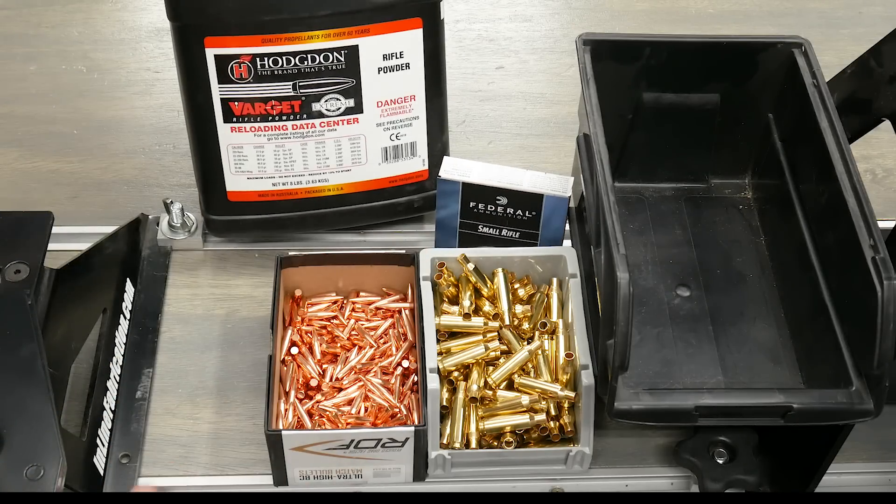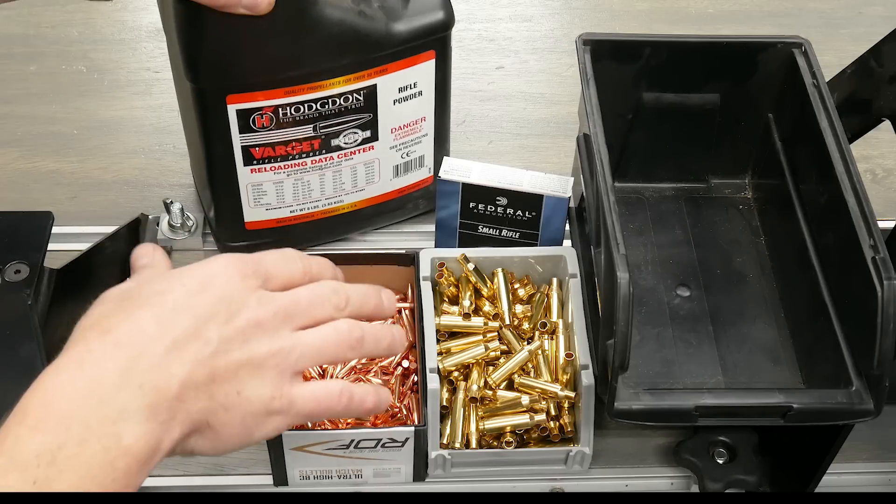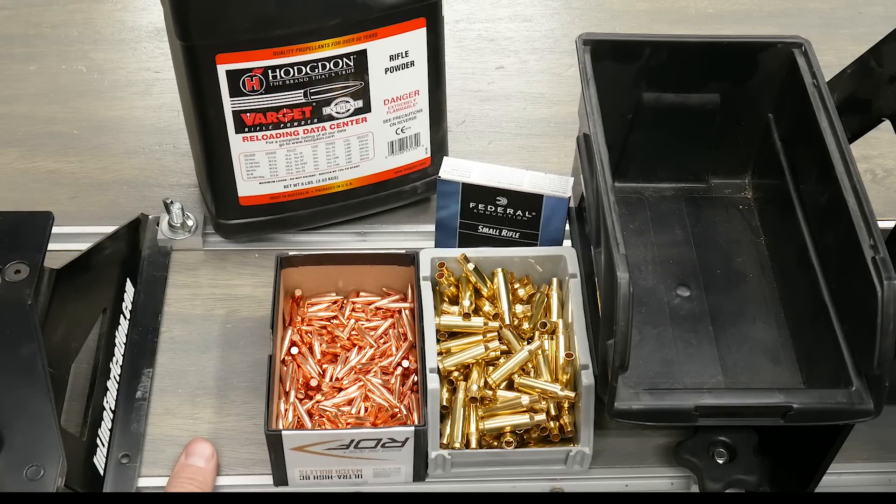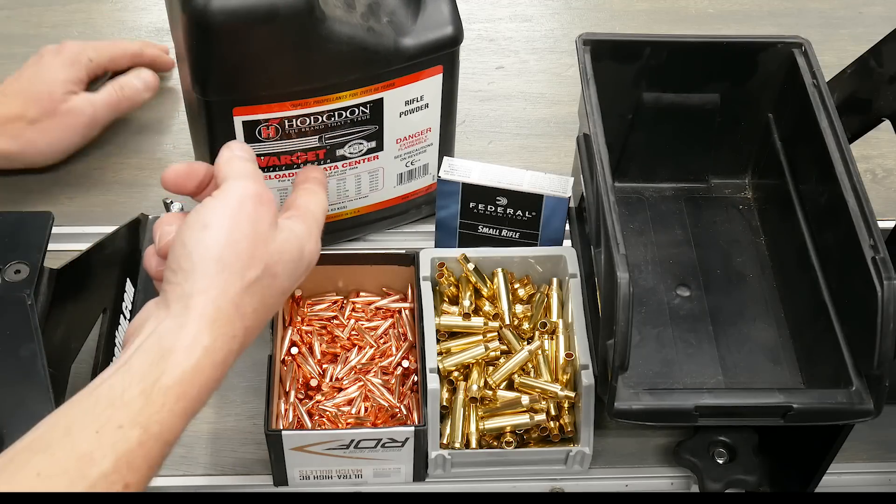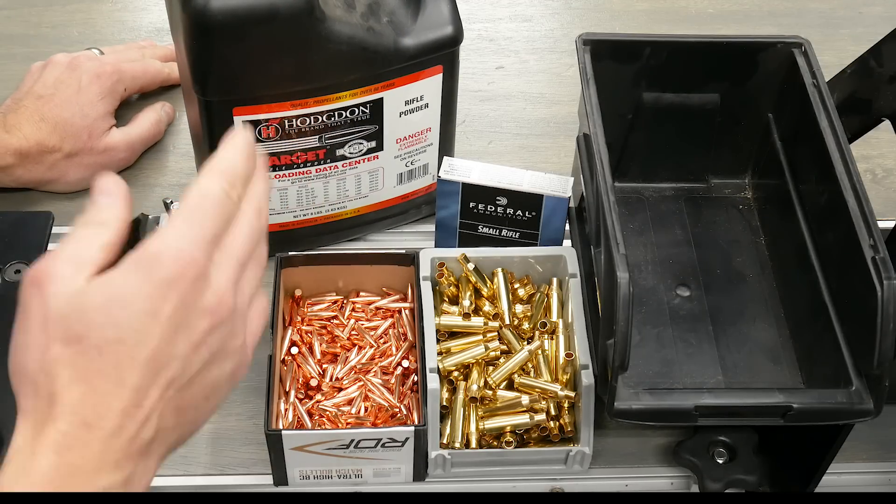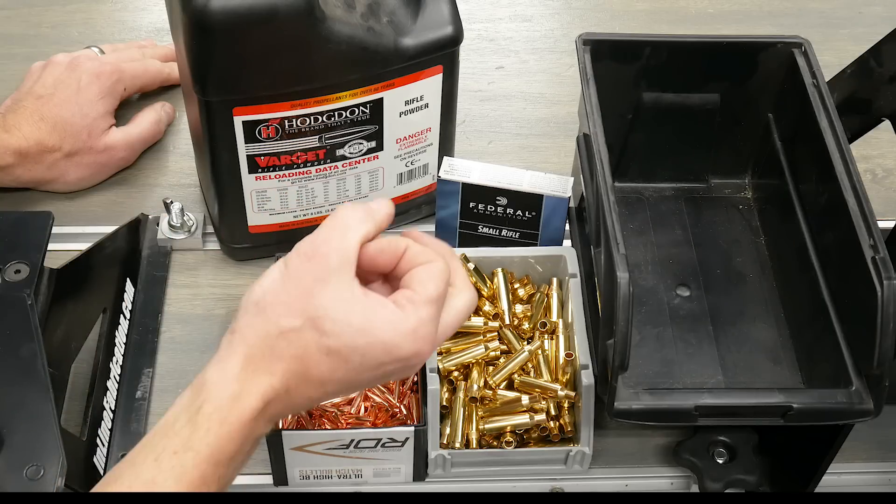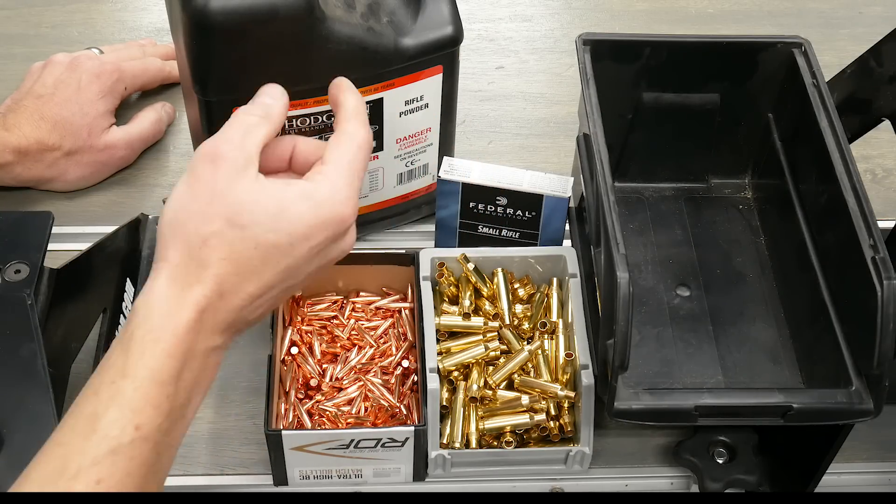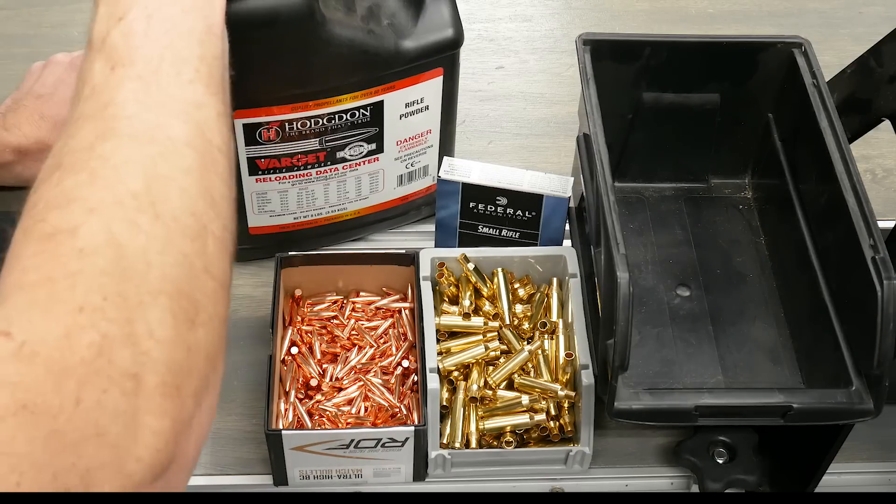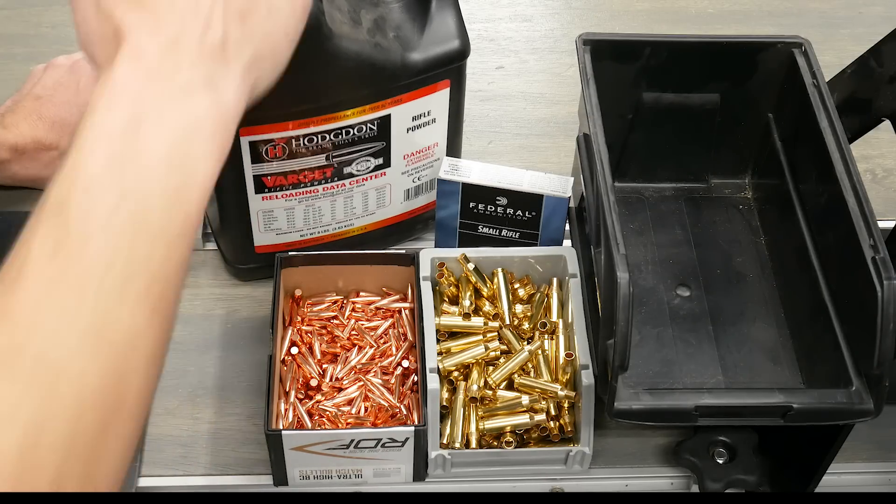And then Varget powder. Varget is good for kind of the middle to lower weight bullets in this weight range. And the other note is it's a shorter stick powder compared to H4350, which I have had a little bit of trouble with with the 22 caliber drop funnels. It can bridge because the stick length is just a little bit longer. So Varget, definitely a good powder for this scenario.